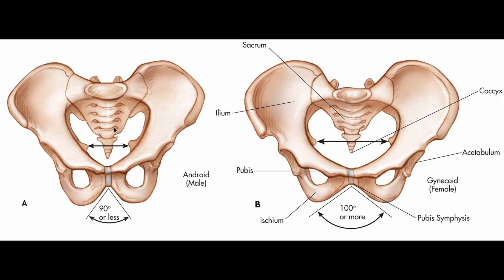The last point to remember — and this is one to emphasize — is the sub-pubic angle, also known as the pubic arc. The sub-pubic angle or pubic arc is more rounded and wider in the female than in the male, meaning the female pubic arc has a greater angle compared to the male.